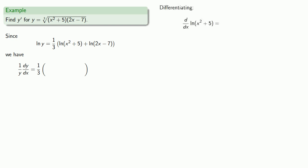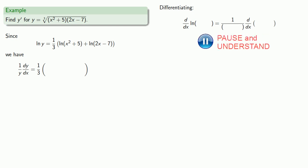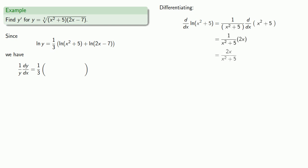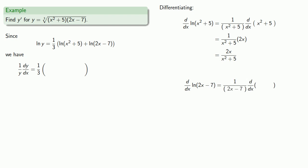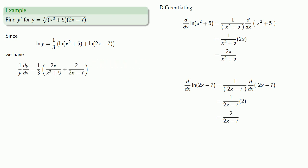We differentiate log of x squared plus 5, which is the log of something, so our derivative will be 1 over something times the derivative of the something. And the derivative of log of 2x minus 7, that's the derivative of log something, is going to be 2 over 2x minus 7. Since we want to find the derivative, we'll multiply both sides by y. And finally, since our function was given entirely in terms of x, we'll replace y with what it's equal to.